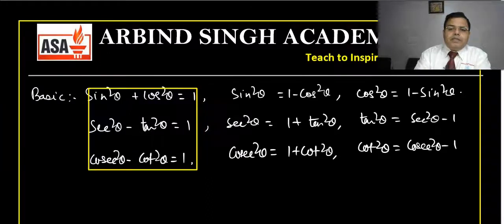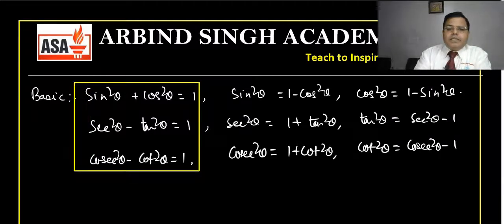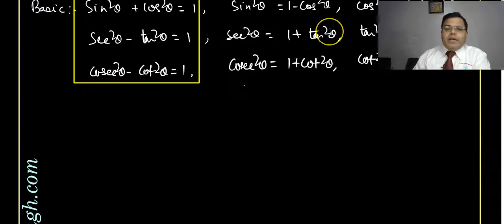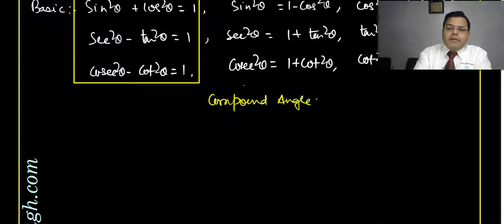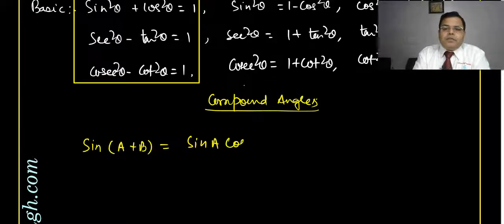You will learn these three basic formulas; the rest are applications of them. Now, as I mentioned, we will discuss compound angles. A compound angle is the sum or difference of two angles. The first formula: sin(A+B) equals sin A cos B plus cos A sin B.